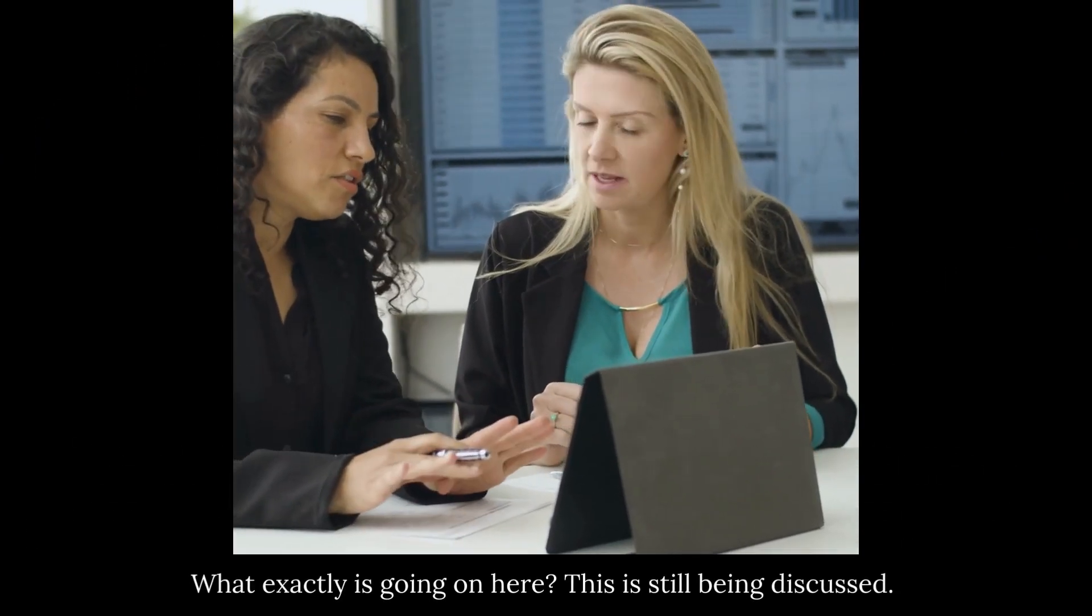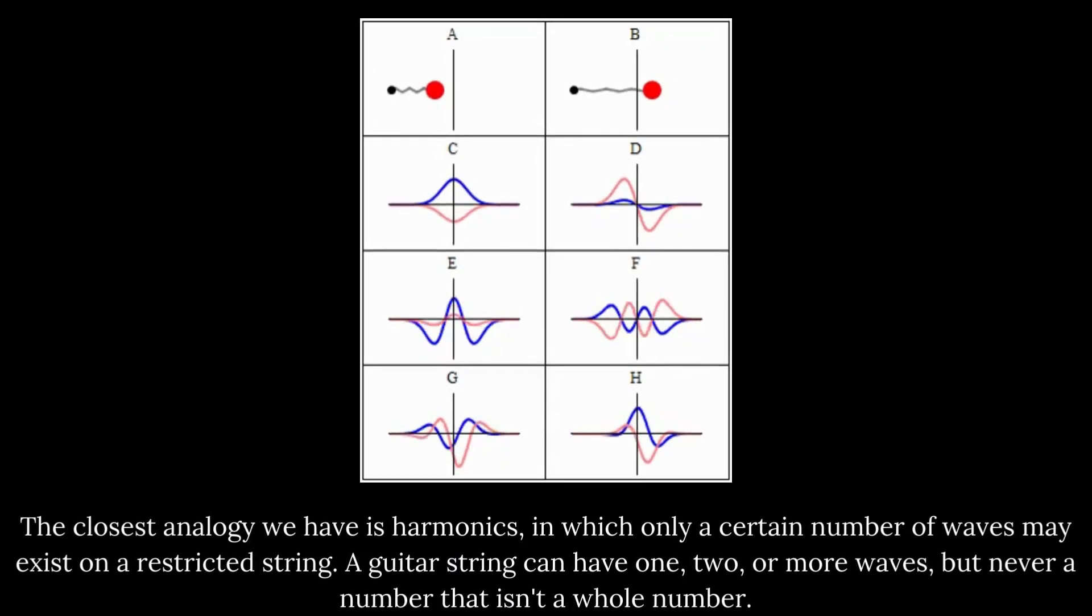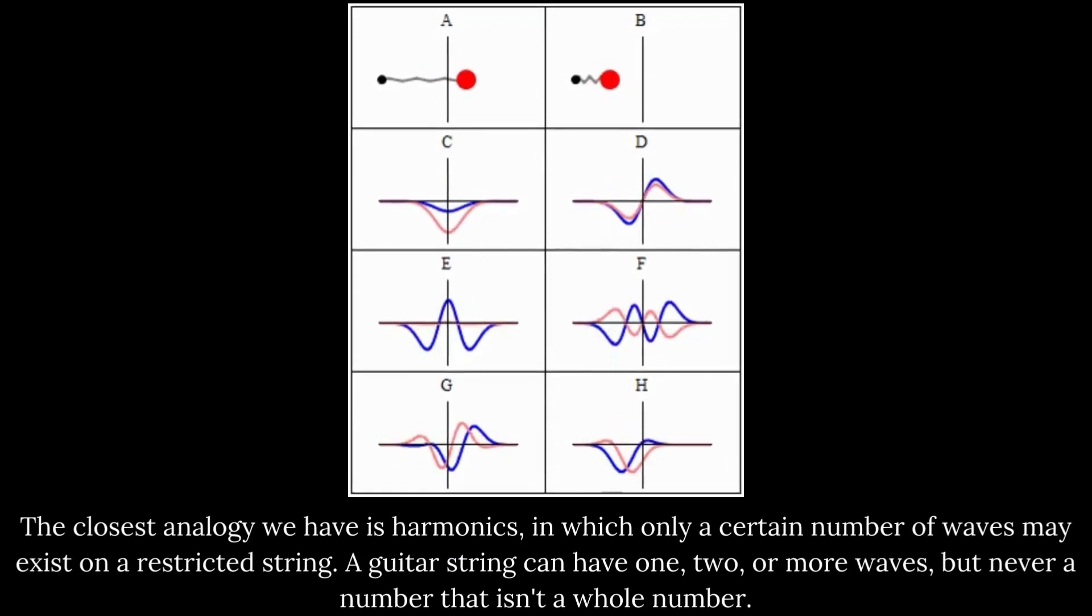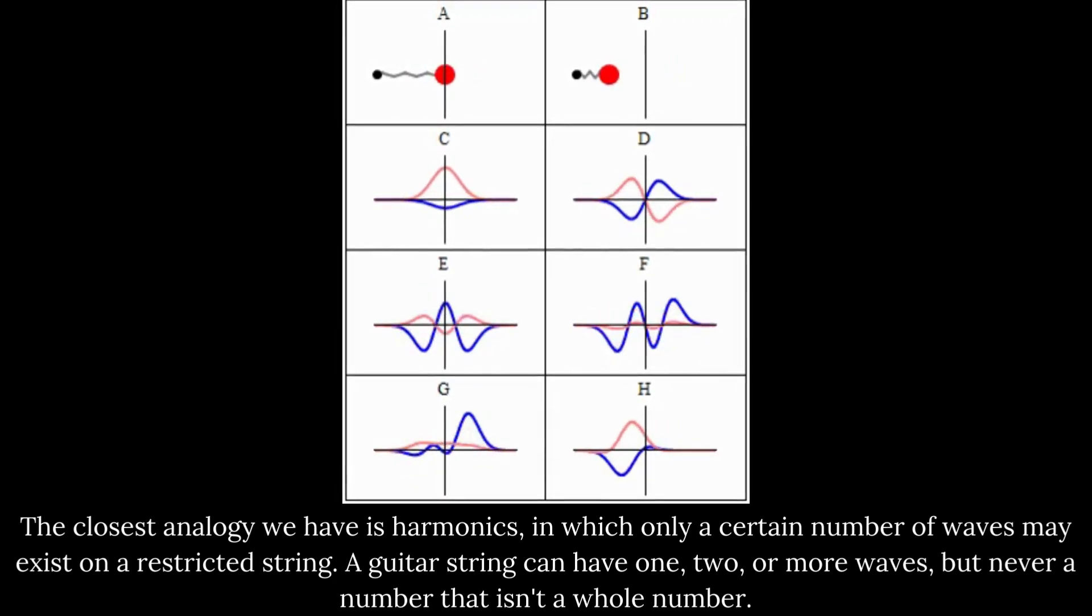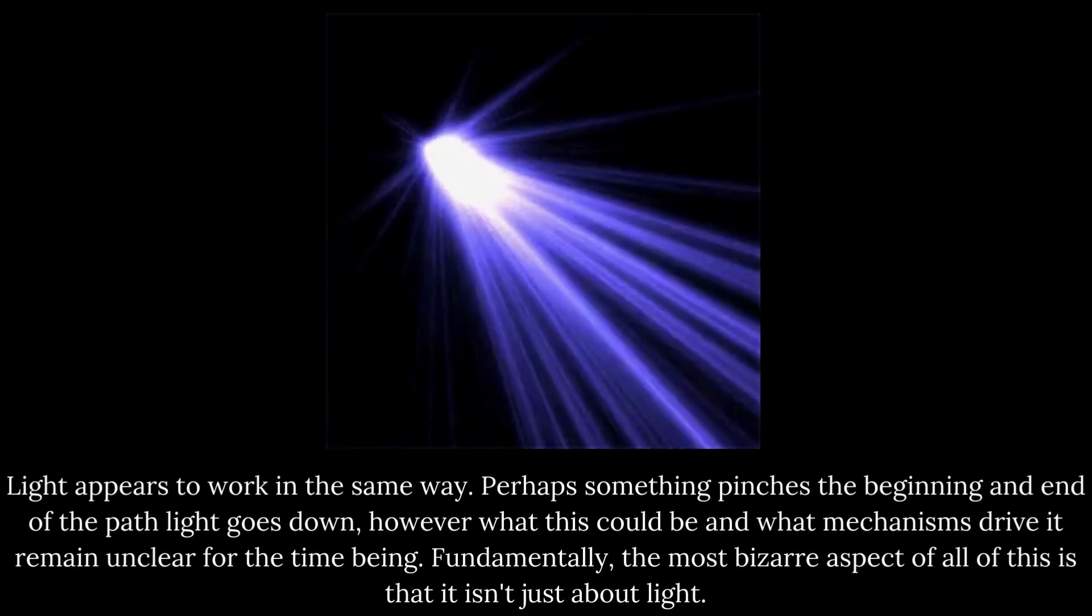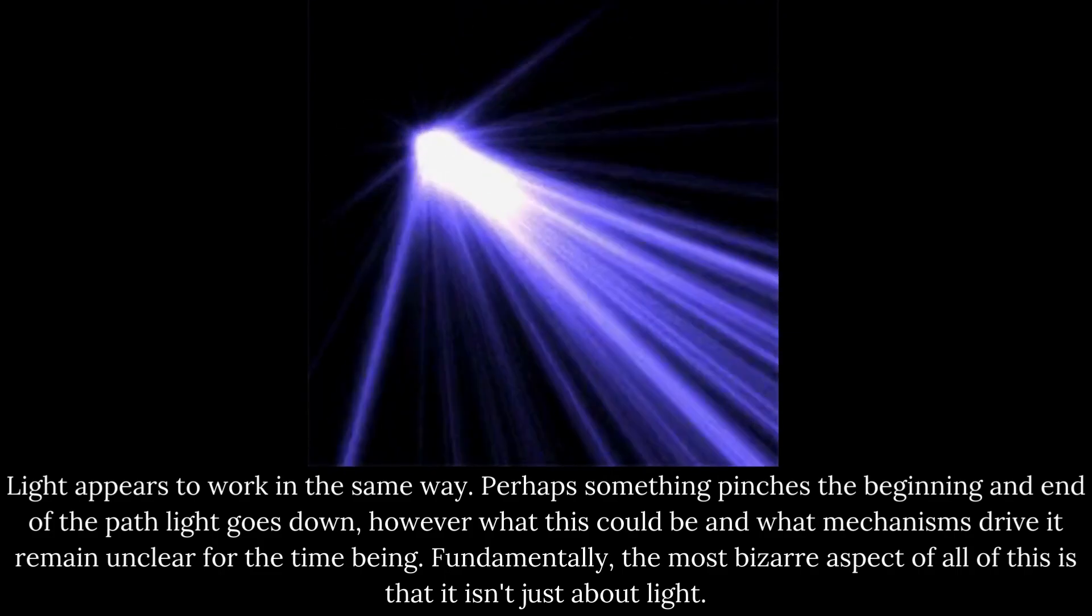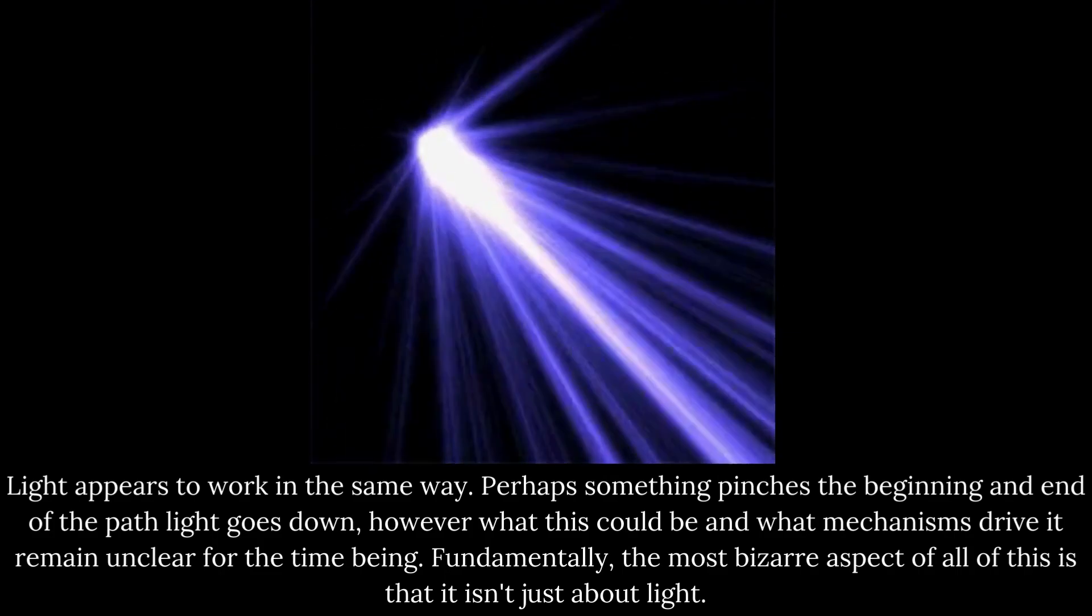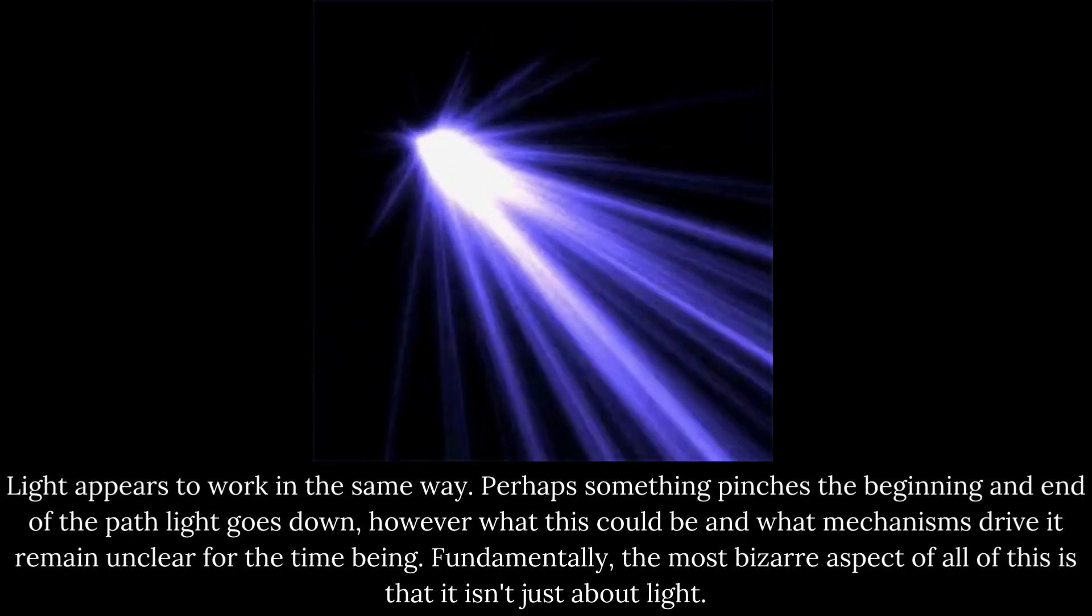What exactly is going on here? This is still being discussed. The closest analogy we have is harmonics, in which only a certain number of waves may exist on a restricted string. A guitar string can have one, two, or more waves, but never a number that isn't a whole number. Light appears to work in the same way. Perhaps something pinches the beginning and end of the path light goes down, however what this could be and what mechanisms drive it remain unclear for the time being.